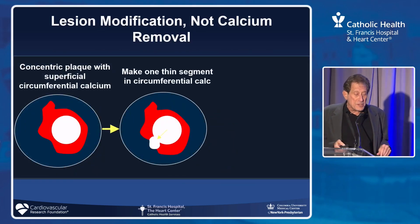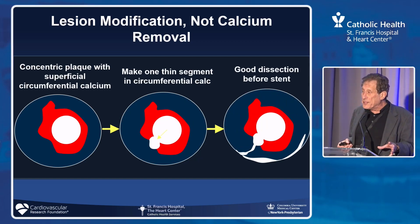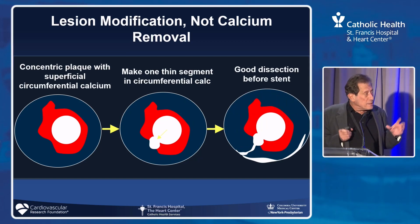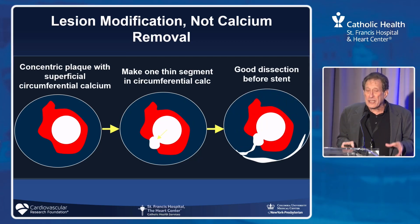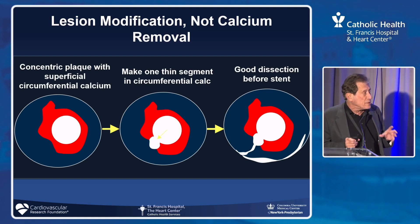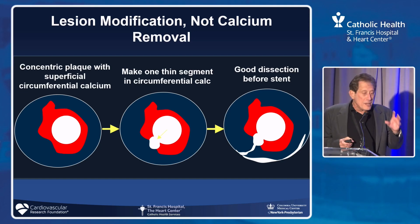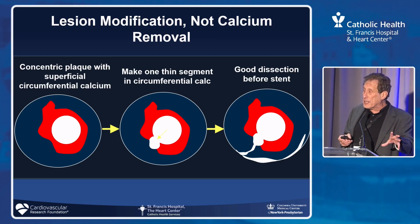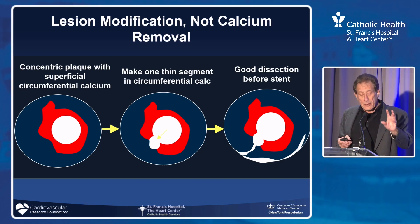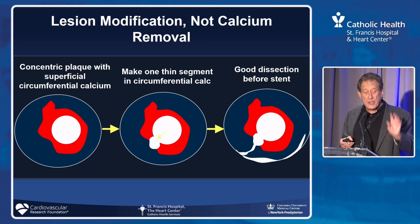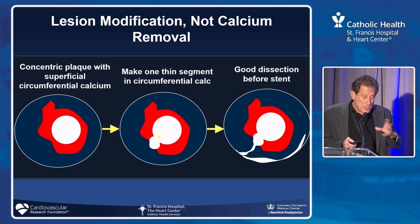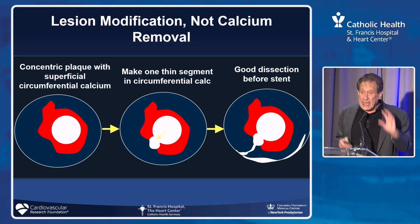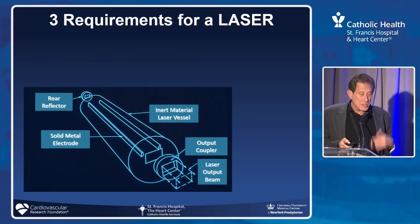To echo Akiko: when we're talking about dealing with calcium, nothing debulks except for directional atherectomy. Our goal is to thin the calcium or fracture the calcium with atherectomy — rotational atherectomy or orbital. It's thinning it to allow fracture, and shockwave changes the equation a bit, but it's about calcium fracture for stent expansion.